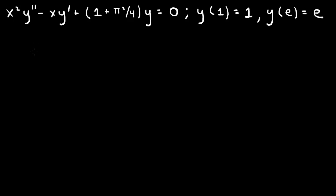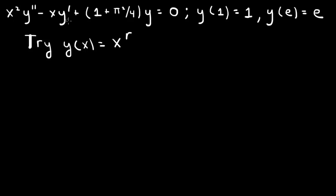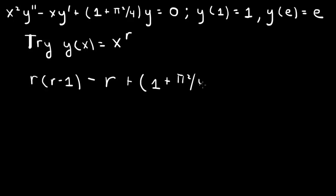The Cauchy-Euler equation lets us find two solutions by a substitution. We try y of x equals x to the r. Because for a power law the derivative drops the exponent by 1, and we multiply by x squared for the second derivative and x for the first derivative, we'll be able to cancel x to the r. So when we substitute in and cancel x to the r, the x squared y double prime term gives r times (r minus 1), the minus x y prime term gives an r, and then the constant 1 plus pi squared over 4, all equal to 0.